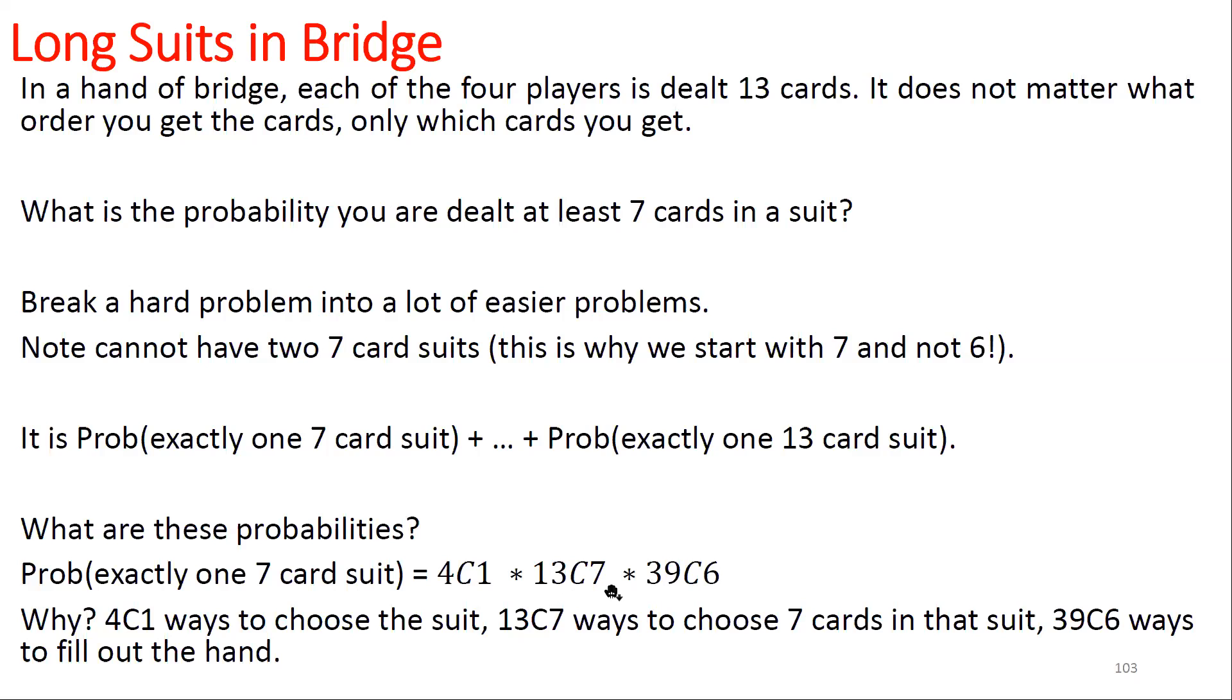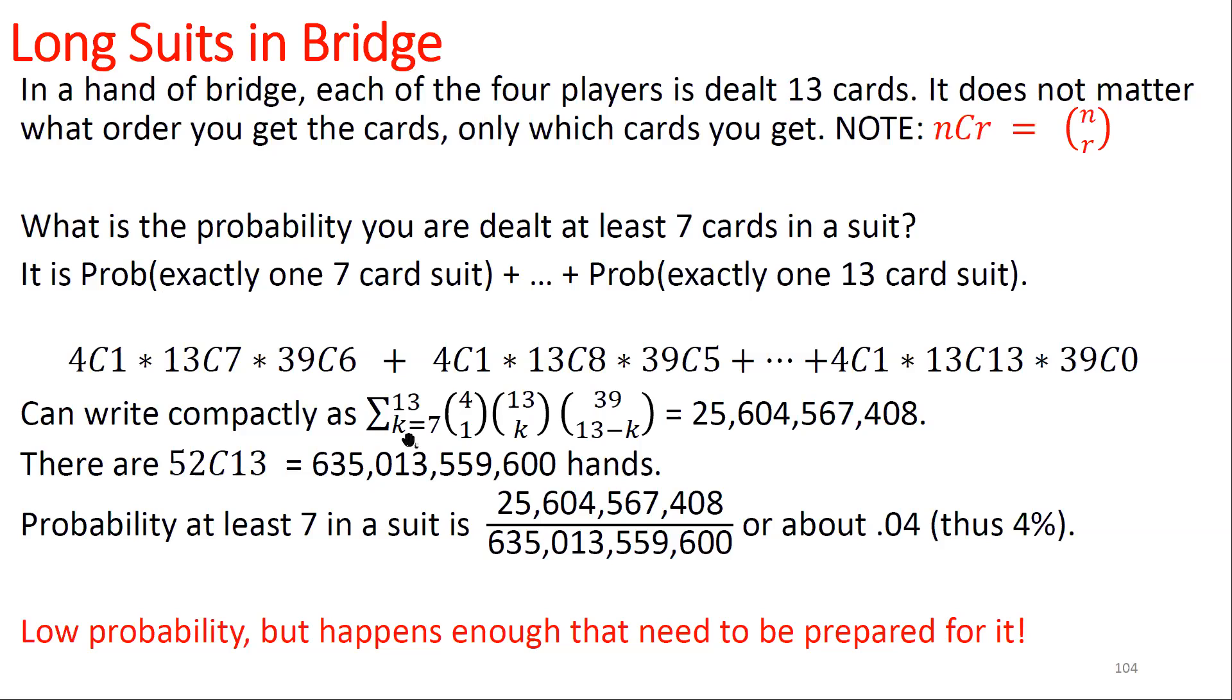If we wanted exactly 8, what would we change? We would choose 8, and choose 5. So it's not so bad. It becomes 8 and 5, and then we keep going all the way to 13C13 times 39C0. Because if we've got all 13 cards, there's nothing else to have. Now we've seen this compact notation before, the summation notation. It means take what you have and first put in the value of k=7, then k=8 and add, then k=9 and add, all the way up to k=13 and add.